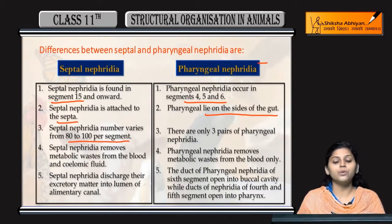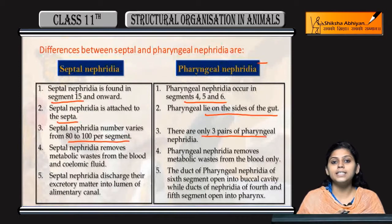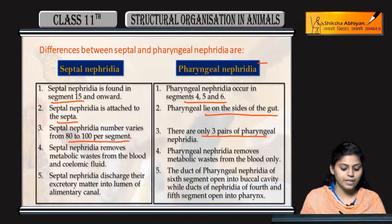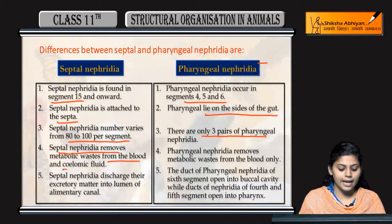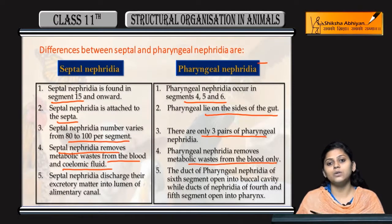Septal nephridia number 80 to 100 per segment, whereas pharyngeal nephridia are only 3 pairs present in segments 4, 5, and 6. Septal nephridia remove metabolic waste from blood and coelomic fluid, whereas pharyngeal nephridia remove waste only from blood.